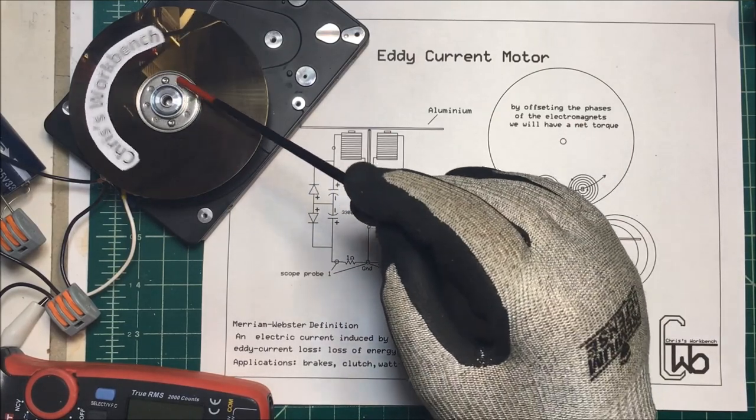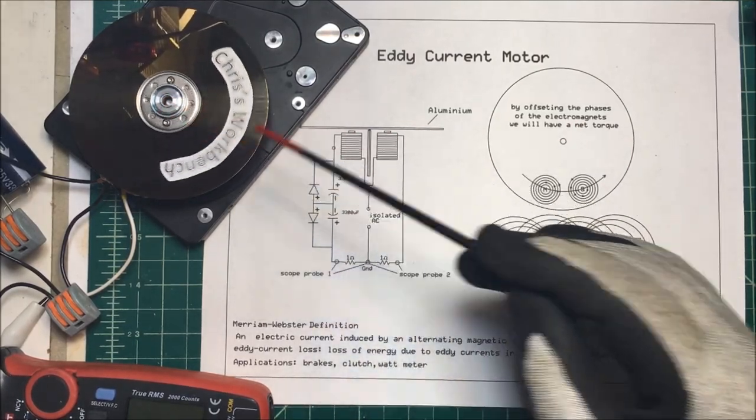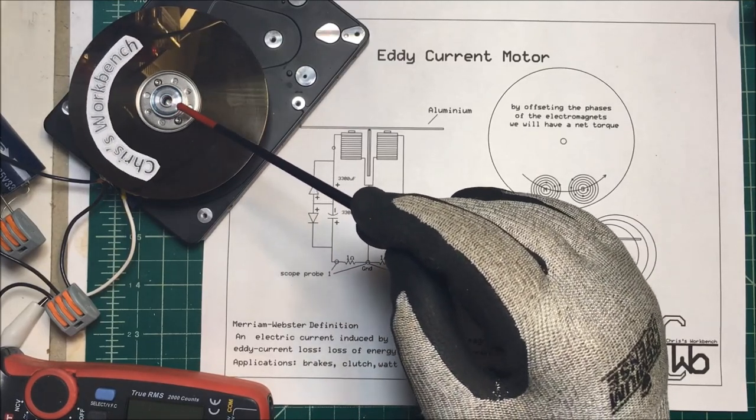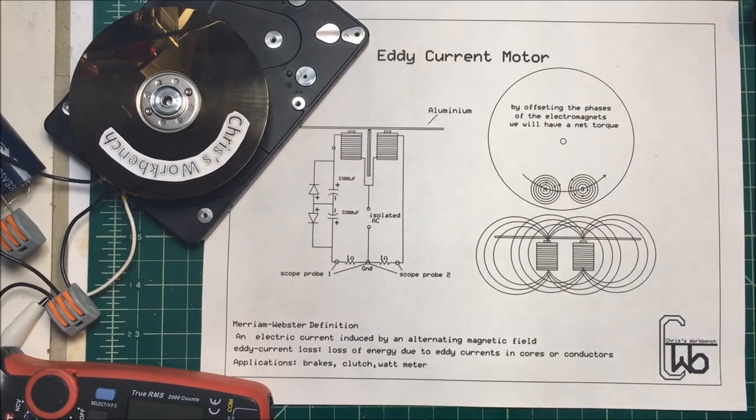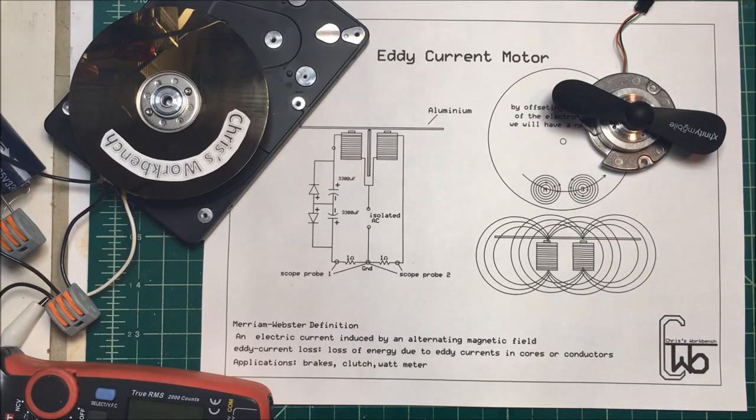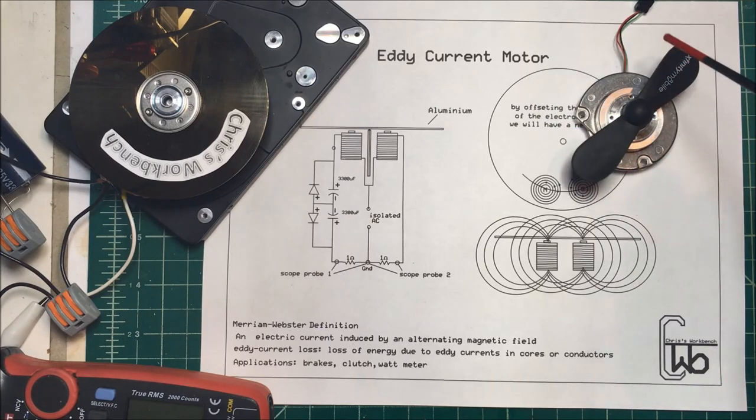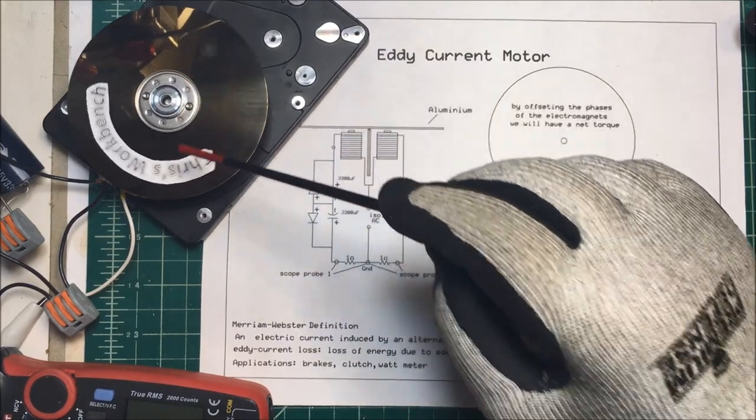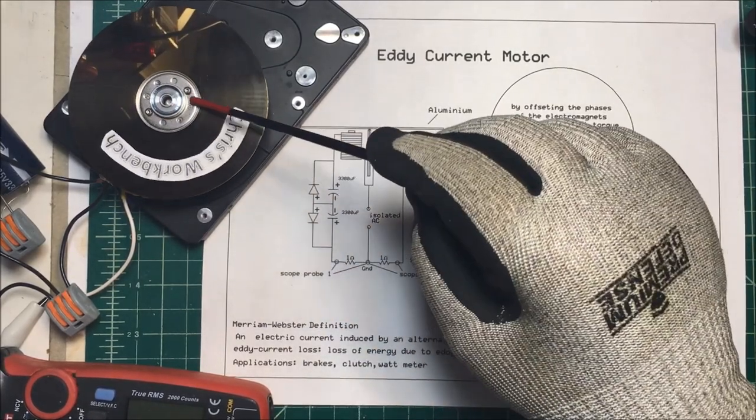What I did do though is I took the motor apart and pulled out the armature because it interacts with the permanent magnet in there and the motor is not free to spin. So basically I'm just using the motor as the bearings so this thing can spin freely.